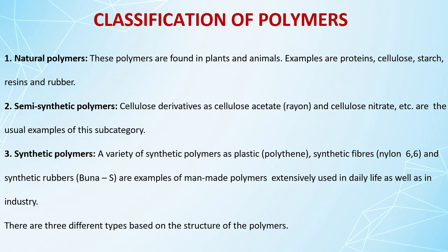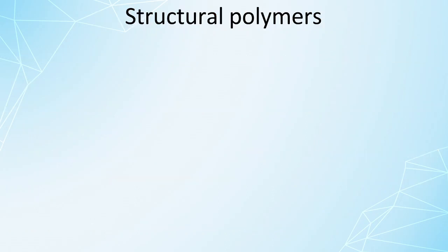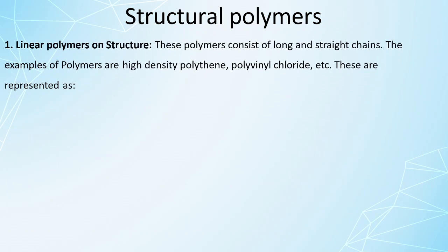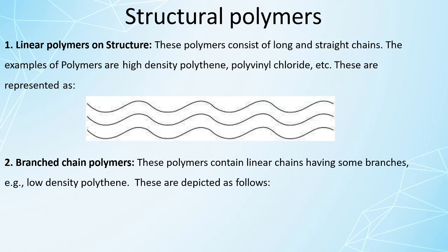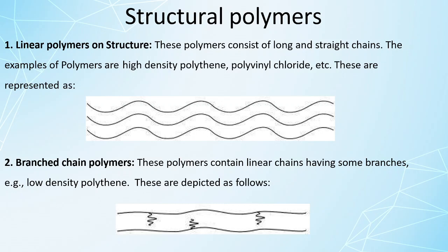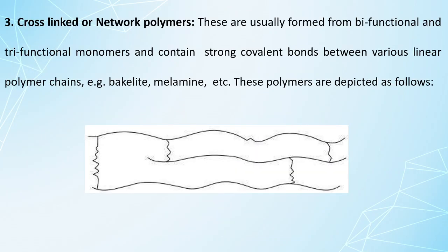Another classification of polymers is based on their structure. The first type is linear polymers, where the polymers consist of long straight chains with no branching. Examples include high density polythene and polyvinyl chloride (PVC). The second type is branched chain polymers, where along the main chain some branches come out — an example is low density polythene.